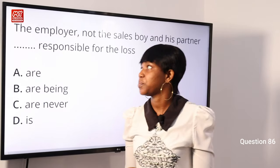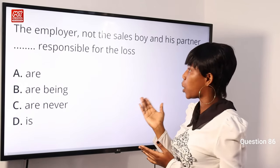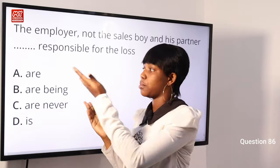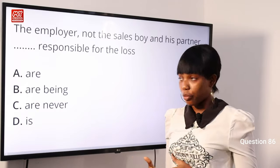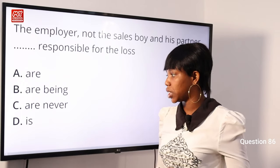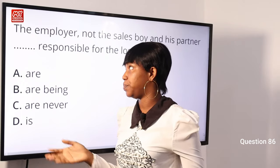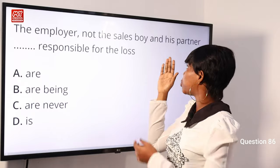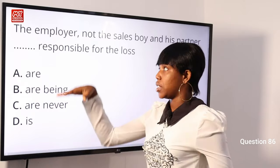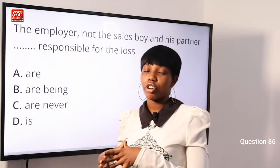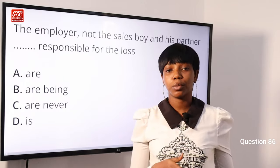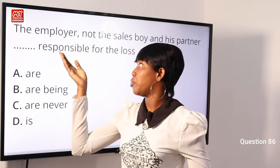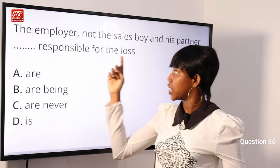Question 86: 'The employer, not the sales boy and his partner, dash responsible for the loss.' We are supposed to fill in the missing gap with a verb form. Options: A) are, B) are being, C) are never, D) is. The subject is a singular subject — 'the employer.' The phrase 'not the sales boy and his partner' is just a distractor. In the rule of concord, a singular subject must agree with a singular verb. The only singular verb in the options is option D) is. The answer is option D.